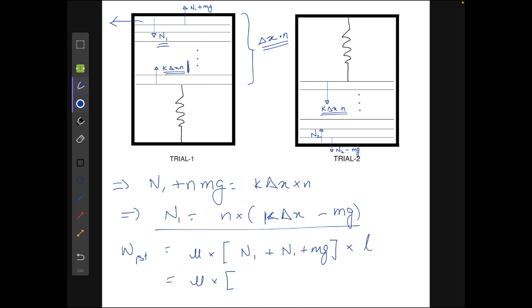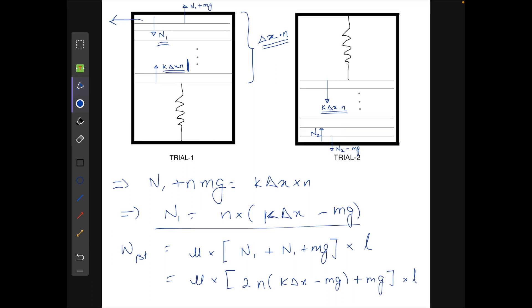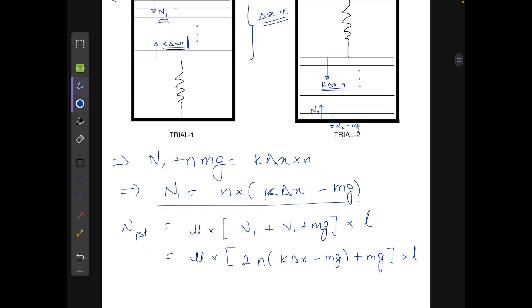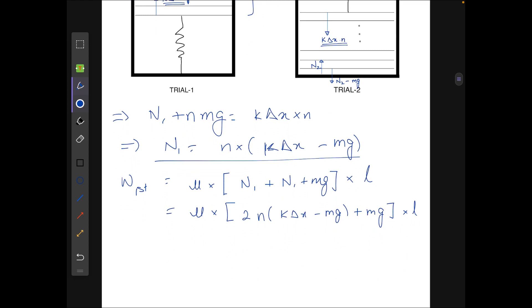If we substitute we get 2n into (k delta x minus mg) plus mg into l. Now similarly working for trial 2, and as trial 2 has the similar notations...